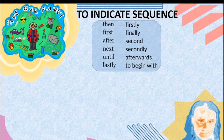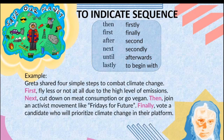Next function: to indicate sequence — meaning a series of events or order of actions. Sample transitions: first, then, after, next, until, lastly, firstly, finally, second, secondly, afterwards, to begin with. Example: Greta shared four simple steps to combat climate change. First, fly less or not at all due to high emissions. Next, cut down on meat consumption or go vegan. Then, join an activist movement like Fridays for Future. Finally, vote for candidates who will prioritize climate change in their platform.